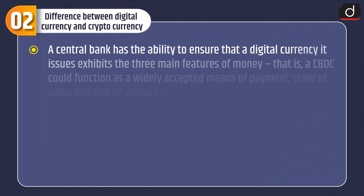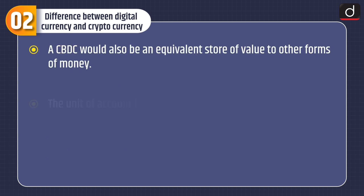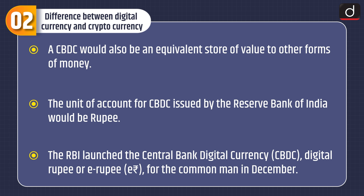Now, the difference between digital currency and cryptocurrency. A central bank has the ability to ensure that a digital currency it issues exhibits the three main features of money — that is, a CBDC could function as a widely accepted means of payment, store of value, and unit of account. Because it is issued by a central bank, a CBDC would have legal tender status, making it widely accepted as a means of payment. A CBDC would also be an equivalent store of value to other forms of money.